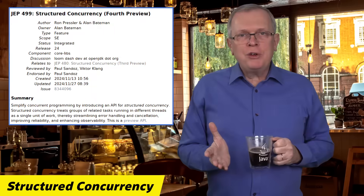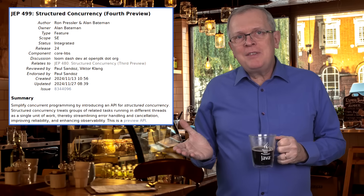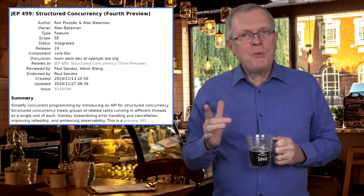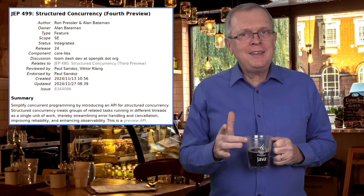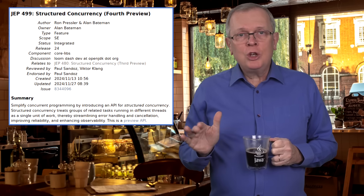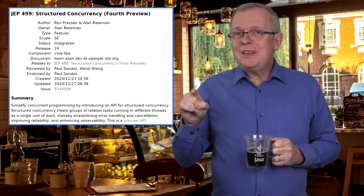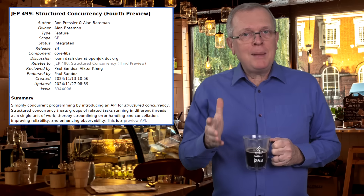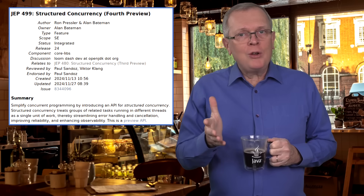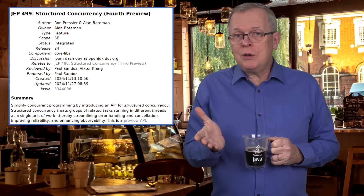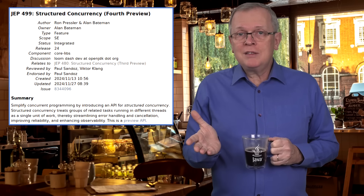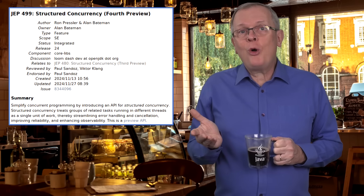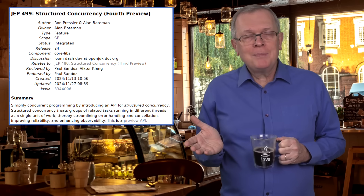Structured concurrency is still in the same state as in JDK 23. JEP 499 brings no change, to continue getting feedback on the current state of the API. That being said, you can also check the early access version of the Loom project to get a glimpse at what could come, and also provide feedback on it.